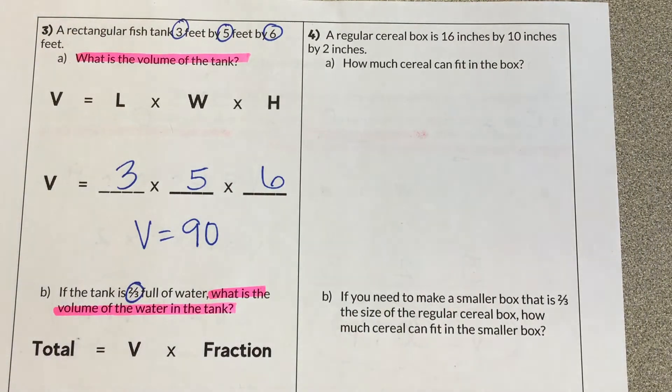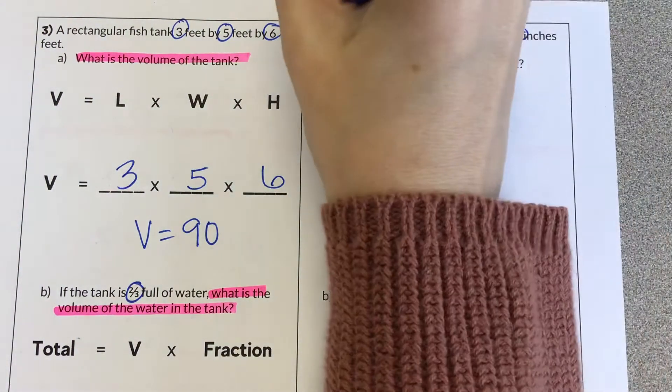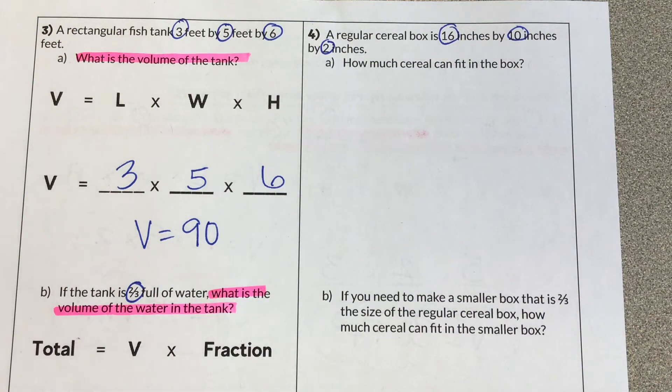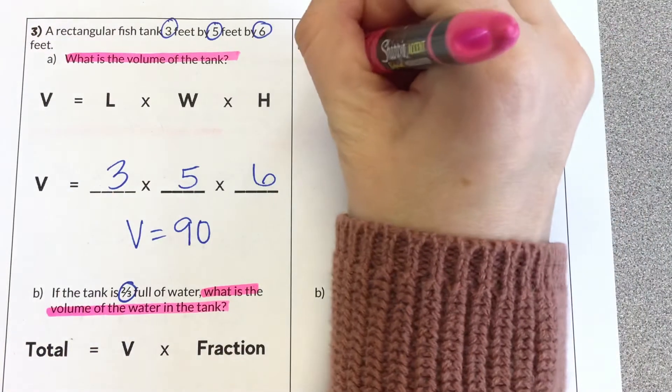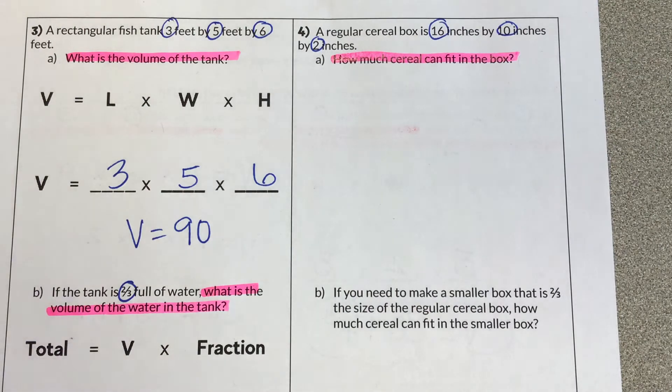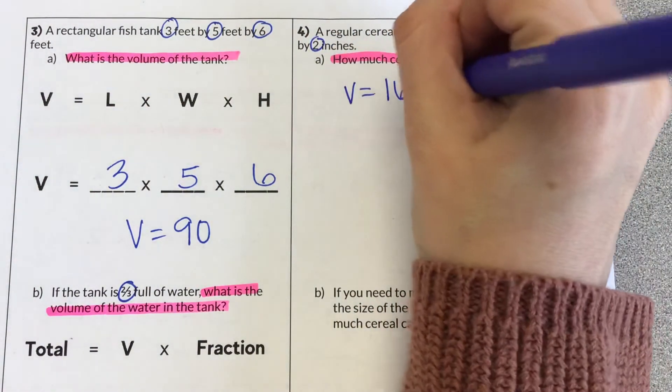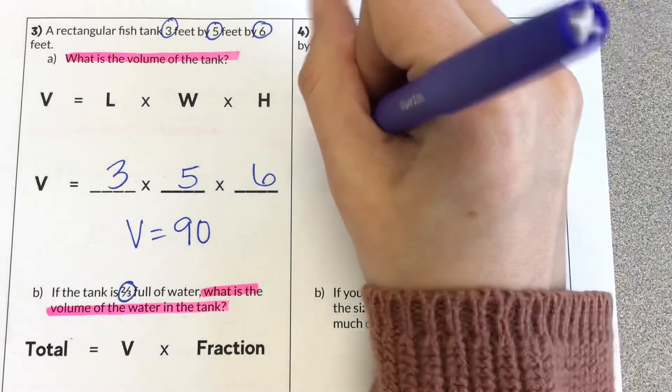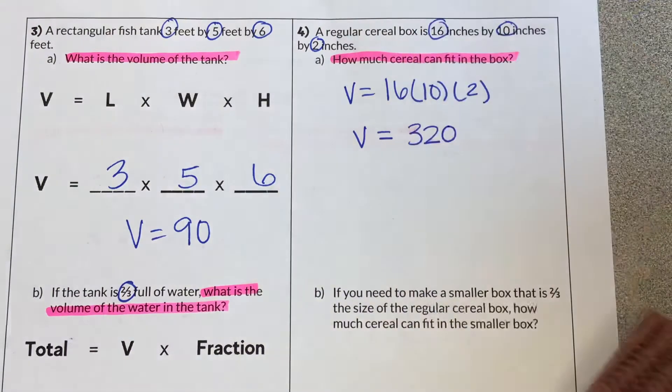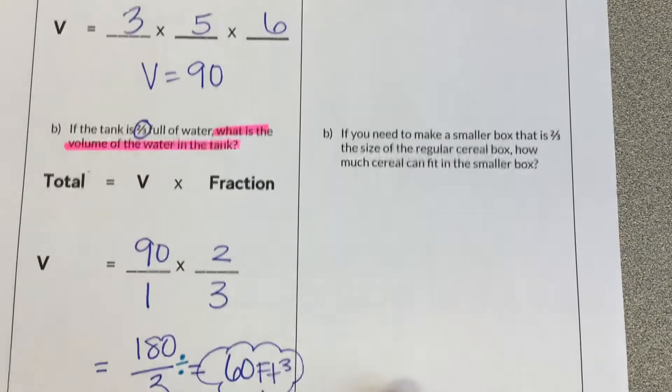Let's try one more. Number 4, a regular cereal box is 16 inches by 10 inches by 2 inches. So I'm going to circle those three numbers. And just maybe from our previous knowledge, we can imagine a cereal box is a rectangular prism. Usually in a rectangular shape. How much cereal can fit in the box? So not explicitly saying that we're looking for volume, but we are filling the box with cereal. And even if cereal boxes don't normally fill it to the brim, we are going to calculate what could it be if you filled it the entire way. So I'm going to multiply 16 times 10 times 2, which gives me 320.